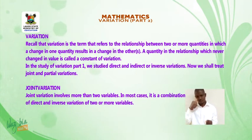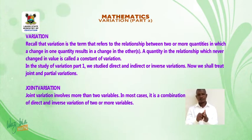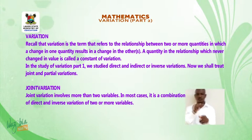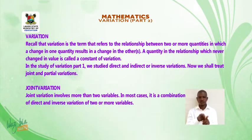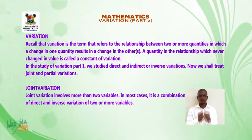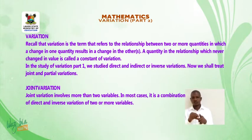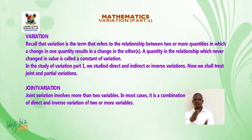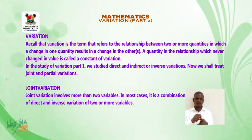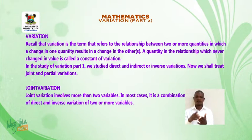Recall that variation is the term that refers to the relationship between two or more quantities, in which a change in one quantity results in a change in the other or others. A quantity in the relationship which never changes in value is called a constant of variation. In Variation Part 1, we studied direct and indirect or inverse variations. Now, we shall treat joint and partial variations.